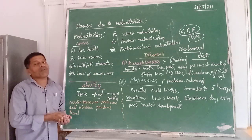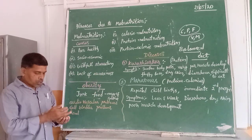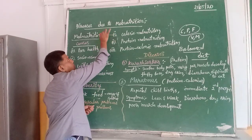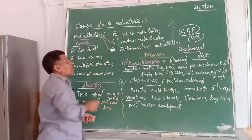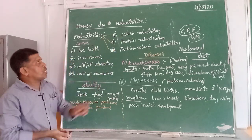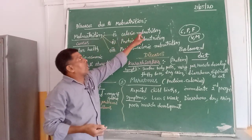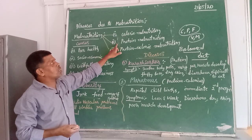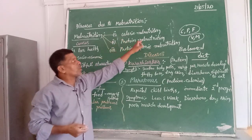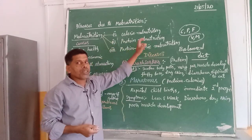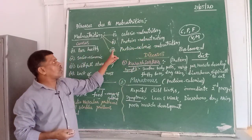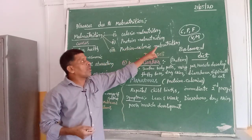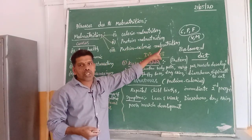Now moving to the types of malnutrition. There are three different types. The first type is called calorie malnutrition. The second type is called protein malnutrition. The third type is called protein-calorie malnutrition.